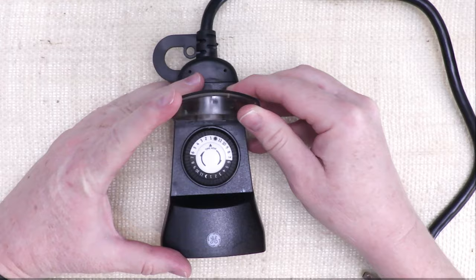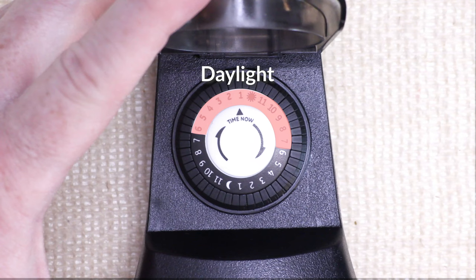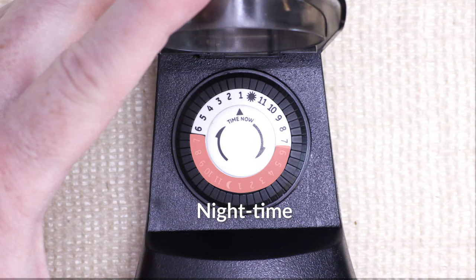The white on the dial represents daylight hours, and the dark on the dial represents nighttime hours, and the little symbols there will show you AM and PM.